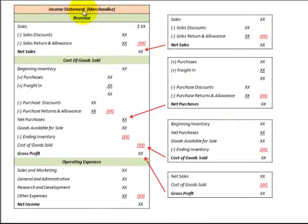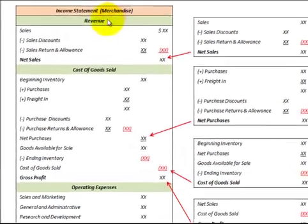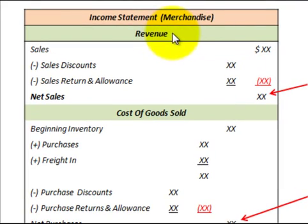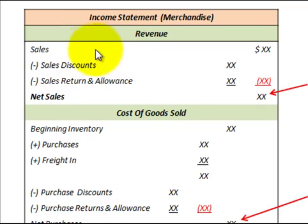Here we're going to look at an income statement for a merchandising company — that is, a company that's selling goods rather than manufacturing them, for example some retail outlets selling to the public. The first thing we want to do is look at the revenue section and what's producing revenue for us.